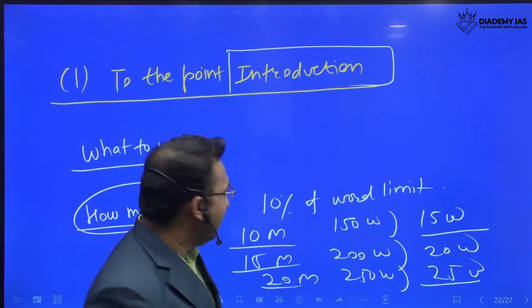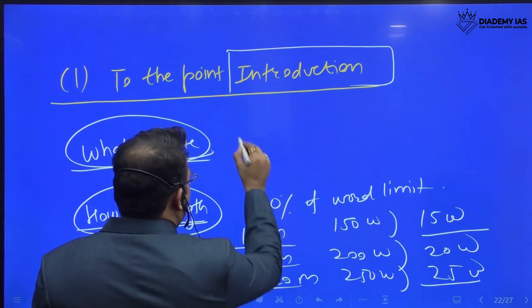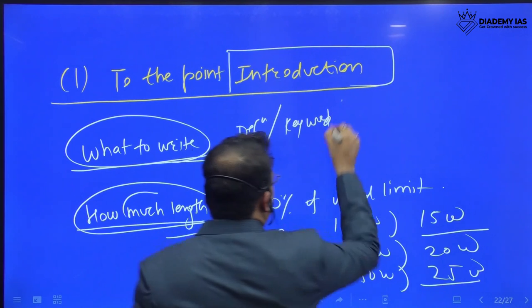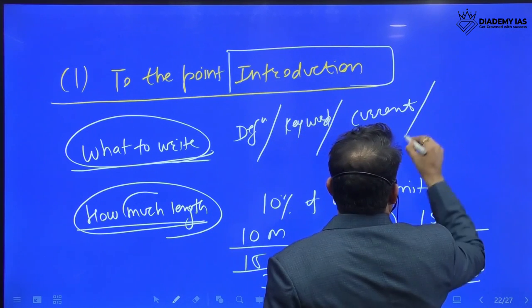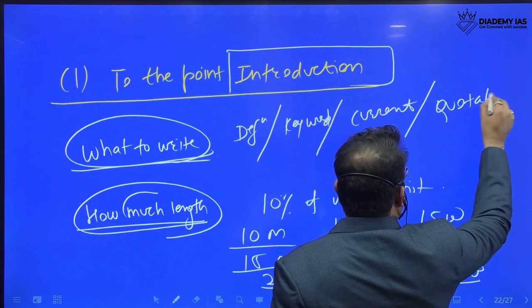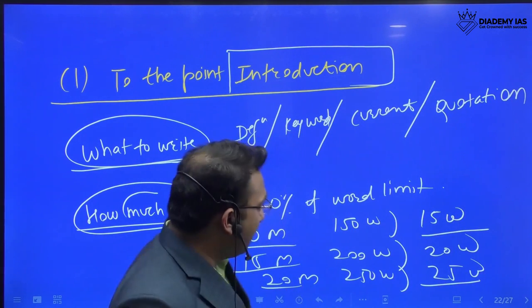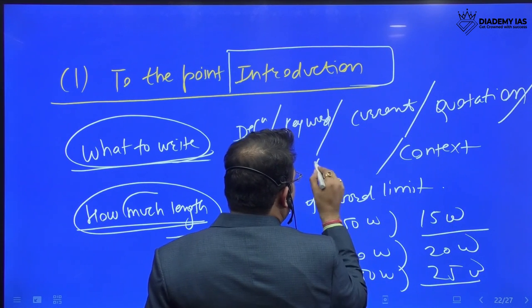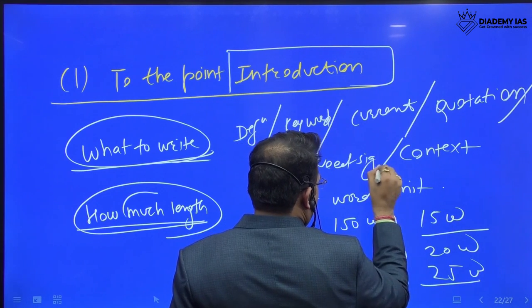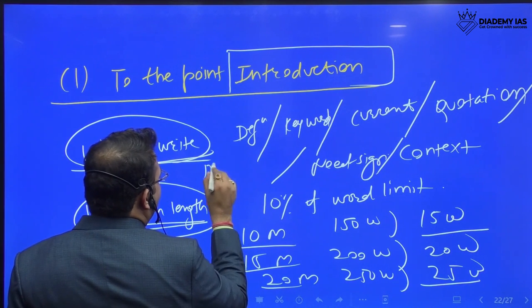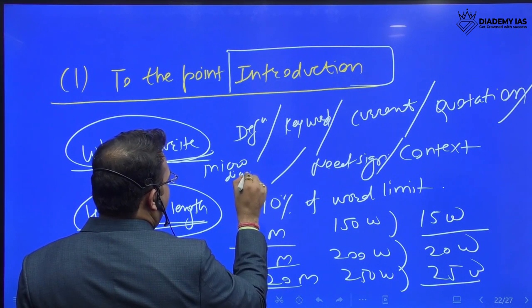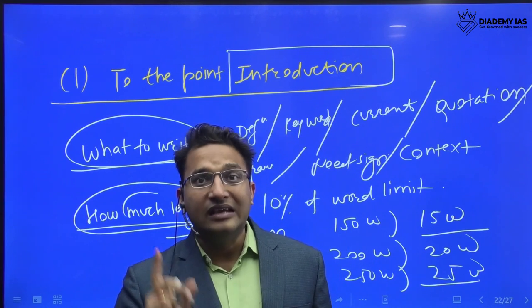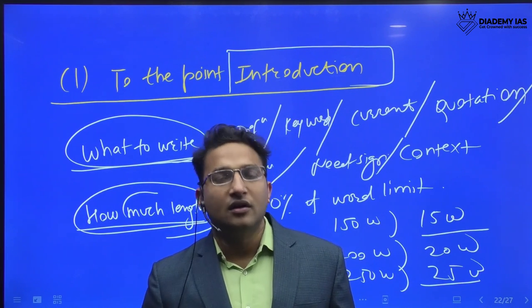Now, what exactly to write in the introduction? You can add the definition, you can explain the keywords given in the context statement, you can write about the current context, you can write about the quotation - this is also a very good way. We are giving the quotation in our study material in every topic. Apart from this, you can give the context of the topic, you can give the need or significance. Even you can make a small micro diagram. As far as possible, please use the thinker name in the definition, in the idea, in the interlinking. The more you use a thinker, the better you get the marks.